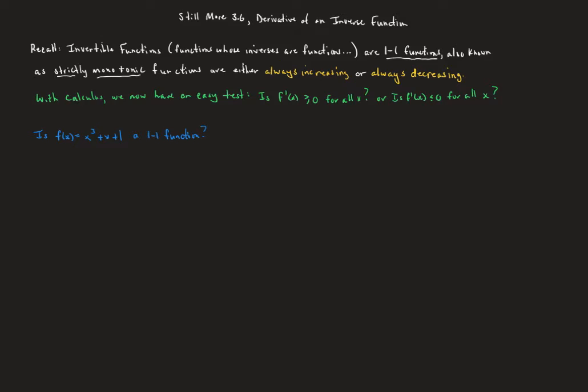With calculus, we now have many more and better tools. We can look at the derivative. If our derivative is always greater than or equal to zero, then the function is always increasing. It's okay for the derivative to equal zero at an occasional point, but not on an interval — you can't have a horizontal line segment, as that would fail the horizontal line test.